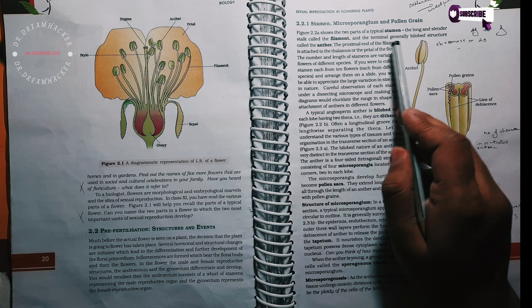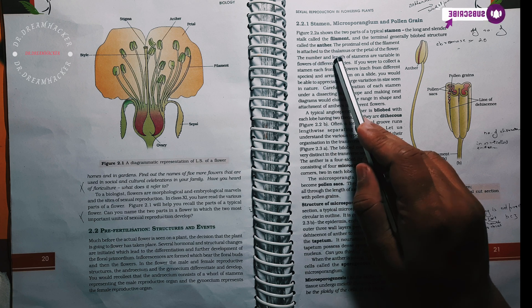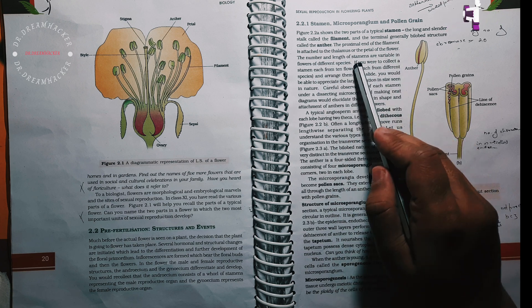The proximal end of the filament is attached to the thalamus or the petal of the flower. The number and length of stamens are variable in flowers of different species.